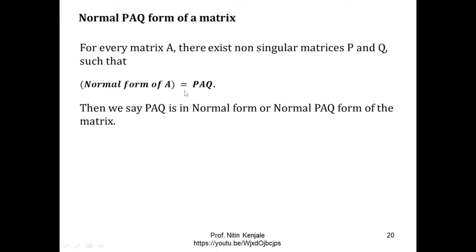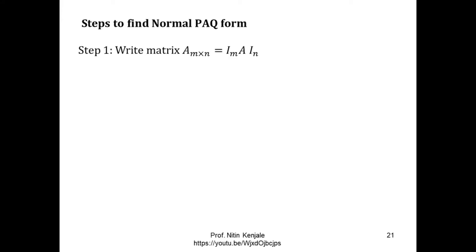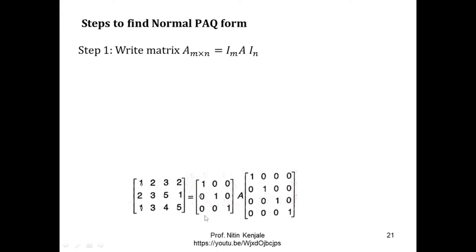This is also called the Normal PAQ form of the matrix. Let me show you the steps involved in reduction of the matrix to Normal PAQ form. In the very first step, if our matrix A is of order m cross n, then we can write it as Im into A into In, where Im is an identity matrix of order m and In is an identity matrix of order n. For example, look at this matrix — this is a 3 cross 4 matrix, so we can write it as the product of I3 into A into I4.